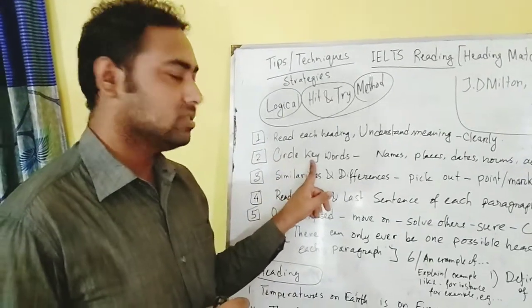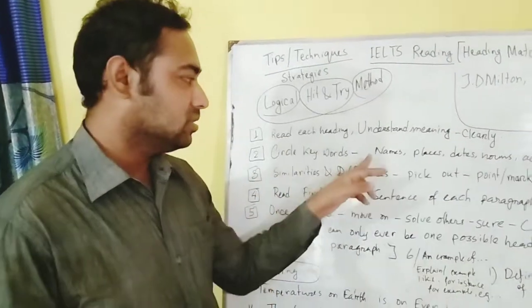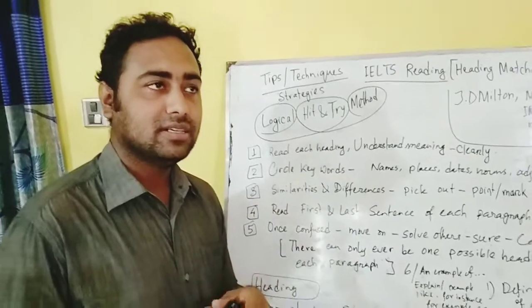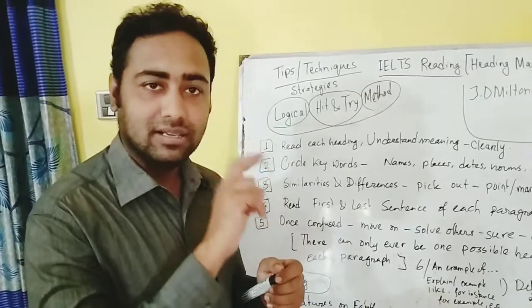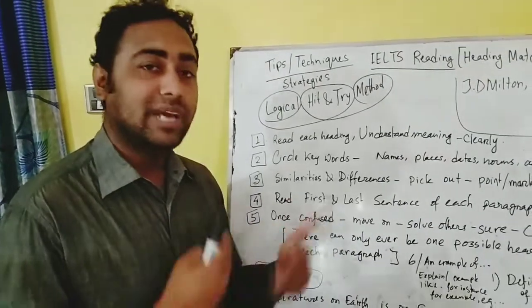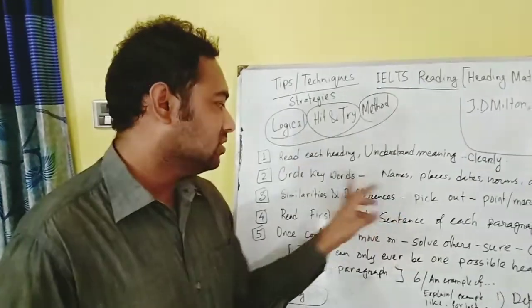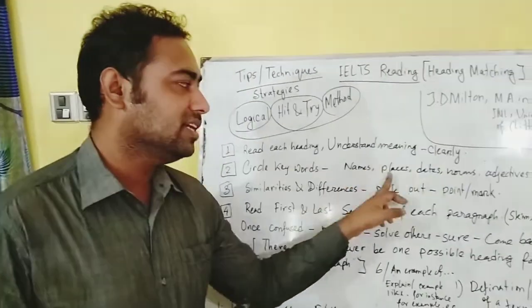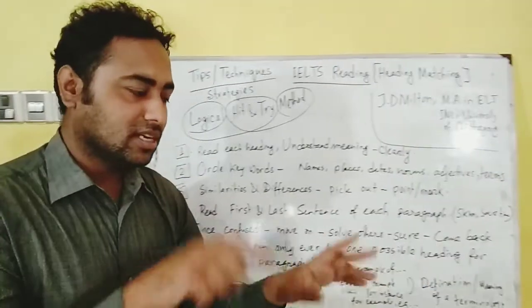Number two: circle the keywords. You have to highlight the keywords. If it is a computer-based exam, press the right button and there is an option called highlight. If it is a manual examination, just mark with the pencil. Circle keywords like names, places, dates, nouns, adjectives, and terms.